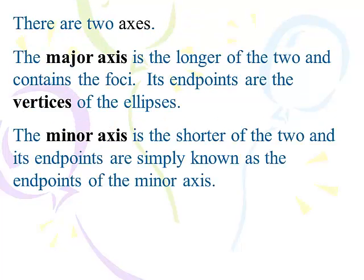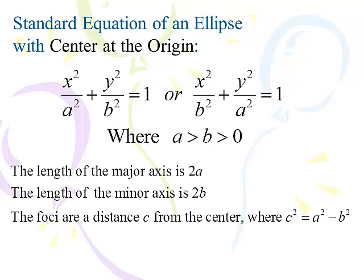Remember, there are two axes, the major axis and the minor axis. The major axis connects the vertices. The minor axis is the shorter of the two and rather boringly connects the endpoints of its own axis. And remember, our basic equation, standard equation for an ellipse at the center of the origin, x squared over a squared plus y squared over b squared equals 1, depending on whether it's a horizontal or vertical major axis. The major axis is 2a, the minor axis is 2b, and the foci is c units from the center, where c squared equals a squared minus b squared.